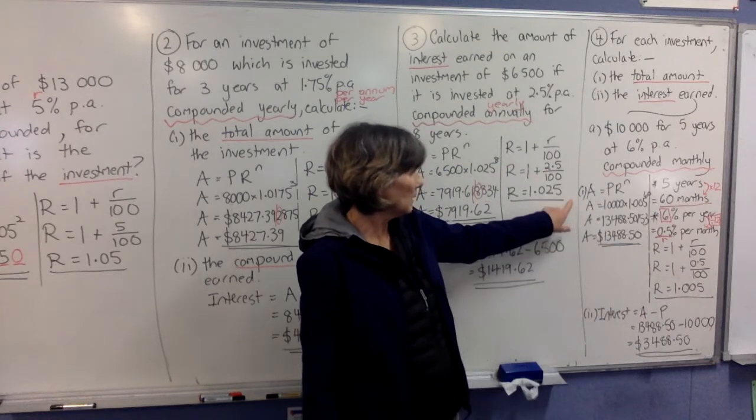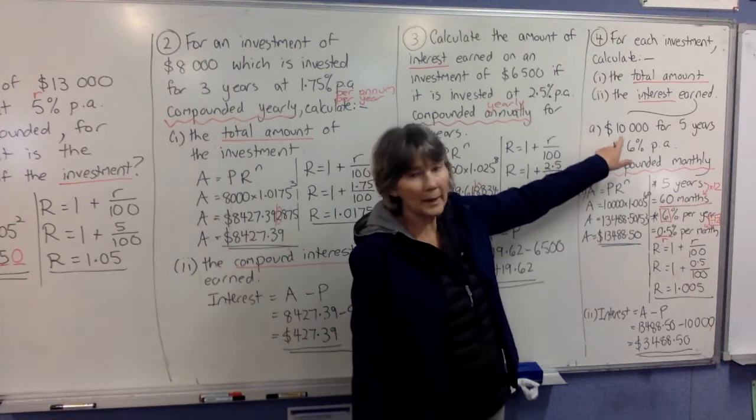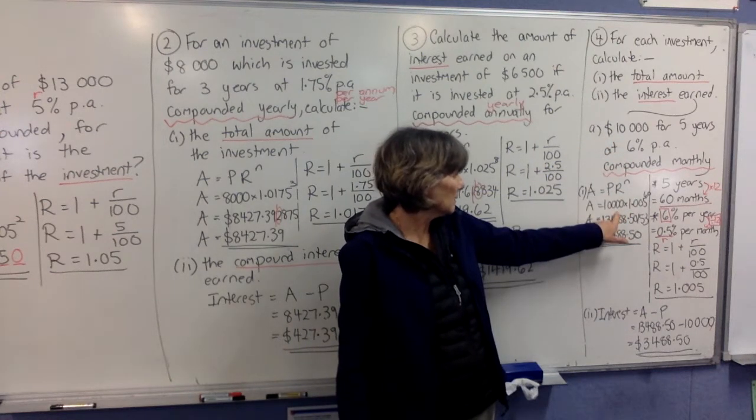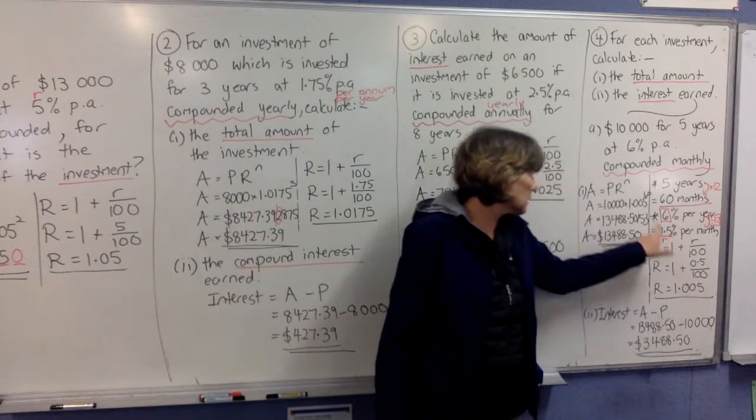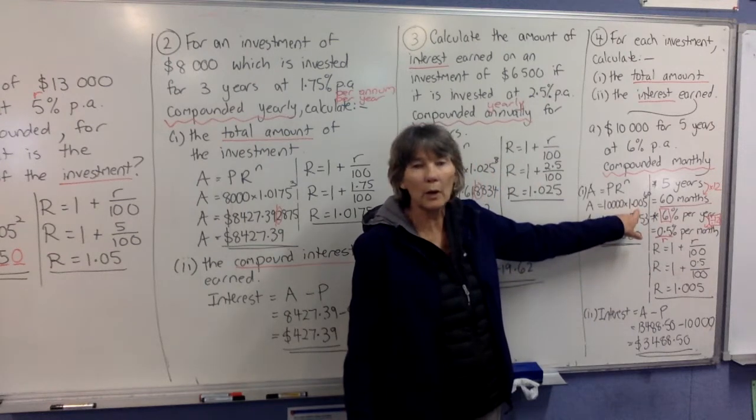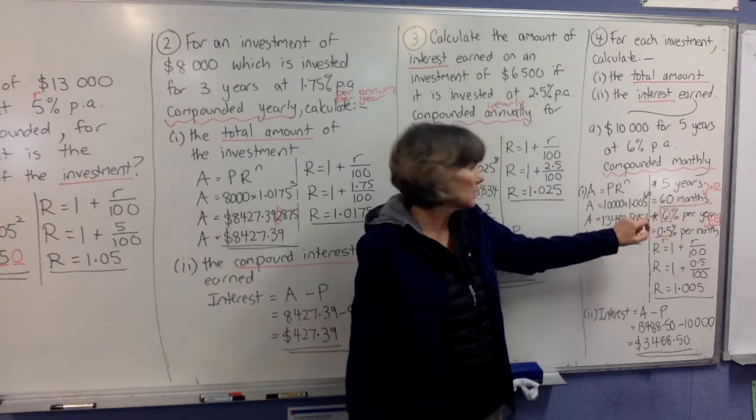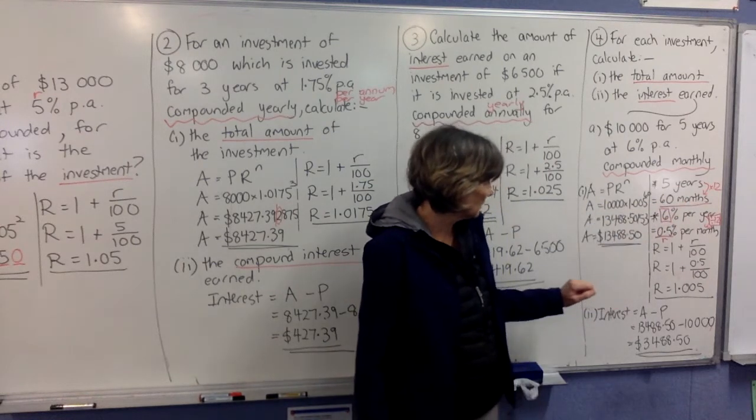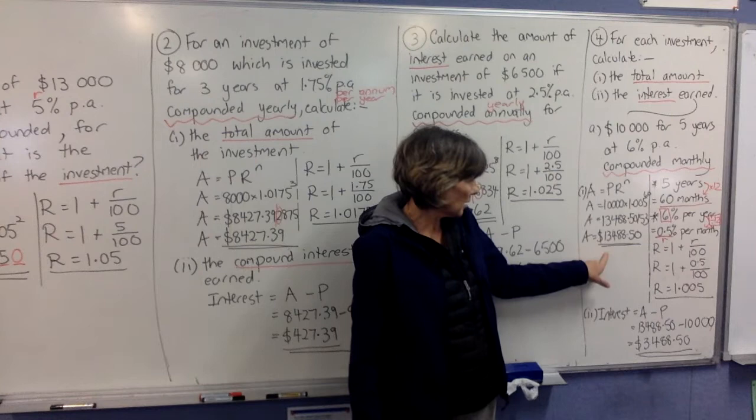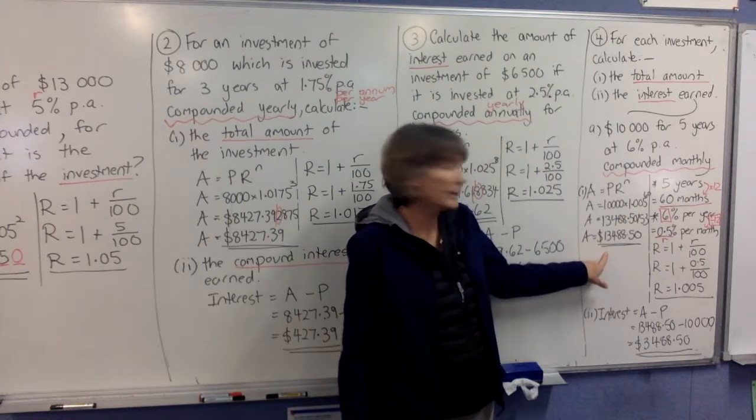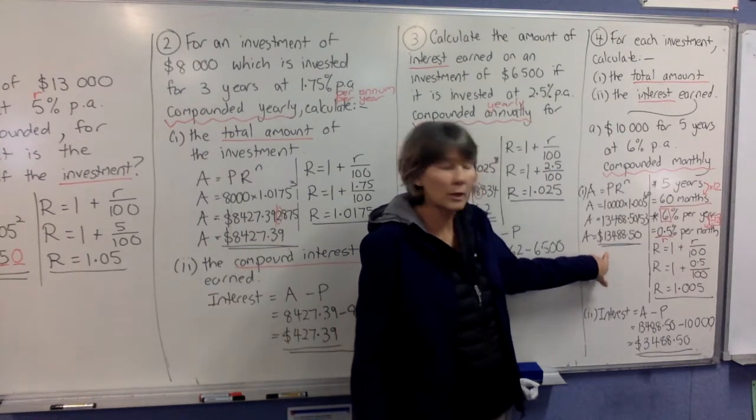Now we come back to the formula. Put your original amount of money in, 10,000, times your decimal you just found, 1.005, to the power of 60, because the N has to be in months. So we're using the 60 months. Work it all out, and you end up with $13,488.50.